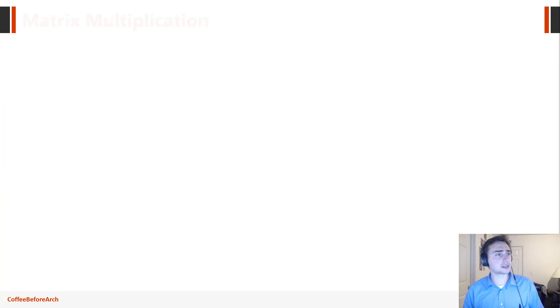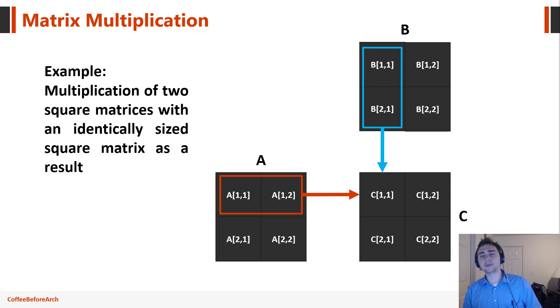So let's get started. So how does basic matrix multiplication work? Now, for every element of a matrix C that is going to be a result, we'll take a row of matrix A and do a sum of products with matrix B. So what does that mean, sum of products? So we'll take A11 times B11 plus A12 times B21, and that will equal C11.